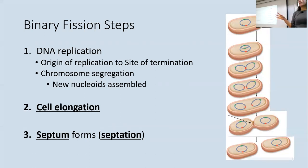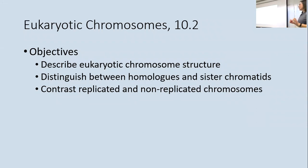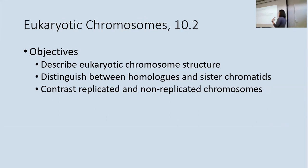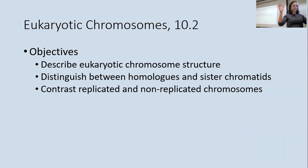Broadly speaking, that same process happens in mitosis, but with a lot more to keep track of — chromosomes, organelles, and all of that. In eukaryotic cells, the priority is getting the genetic information from the first cell into the new cells correctly and completely. We'll talk about chromosome structure and terms like homologues and sister chromatids used during the cell division process.